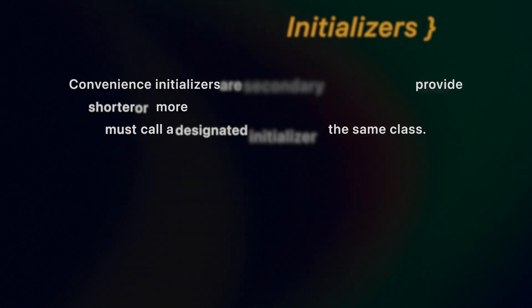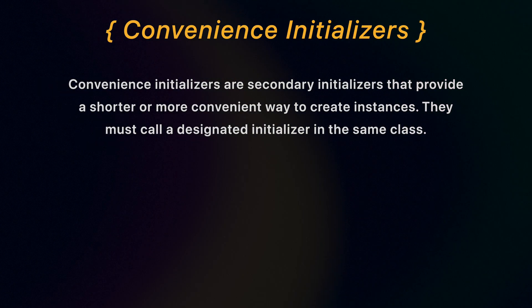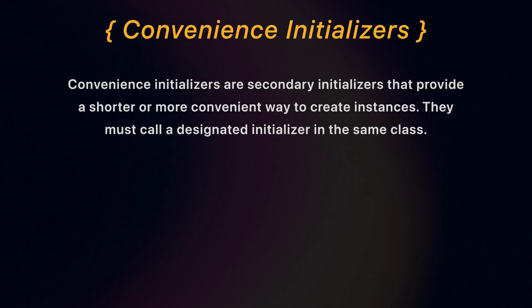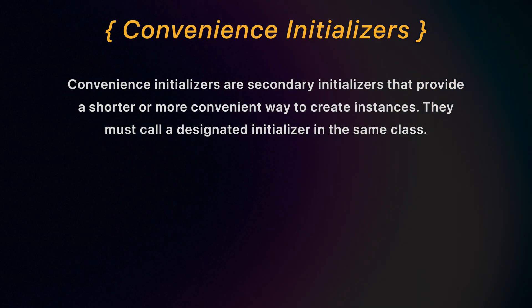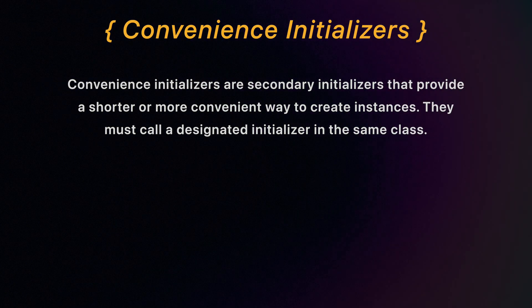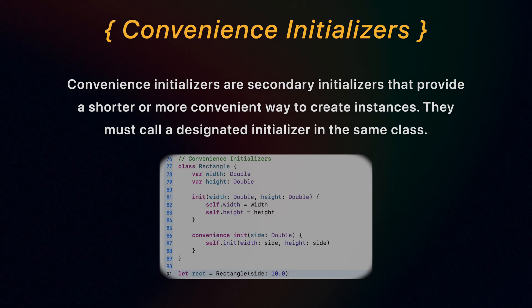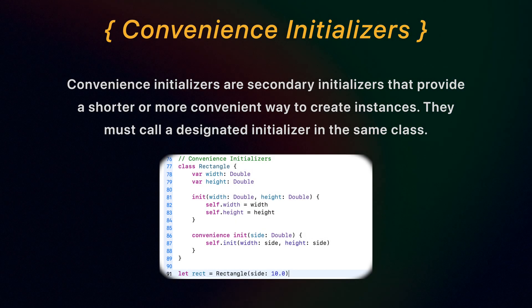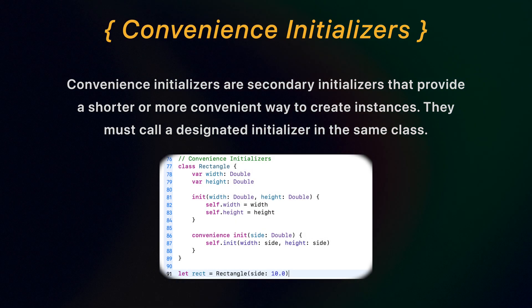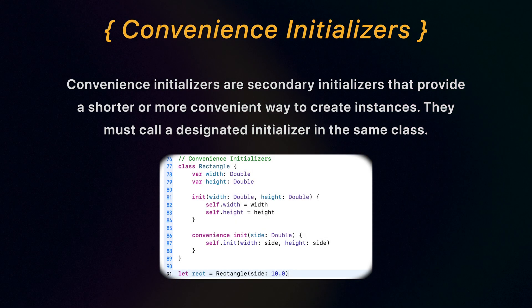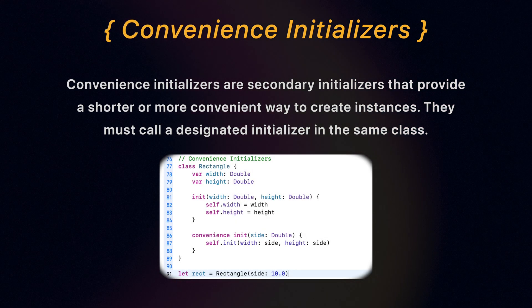Convenience initializers. Convenience initializers are secondary initializers that provide a shorter or more convenient way to create instances. They must call a designated initializer first in the same class.